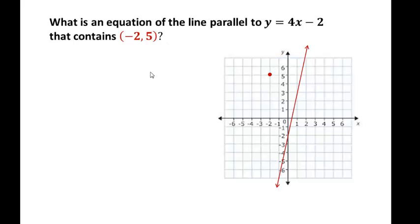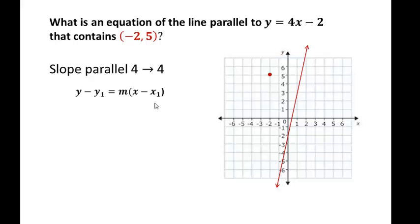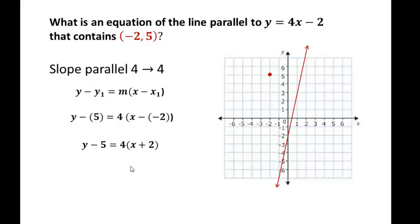Since the new line is parallel, it has the same slope of four. We have a point and a slope, so we use point-slope form. Plugging in: m equals four, y1 equals five, x1 equals negative two. This gives y minus five equals four times the quantity x plus two. Distributing: four times x is 4x, four times two is eight. Adding five to both sides gives y equals 4x plus thirteen — now in slope-intercept form.